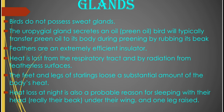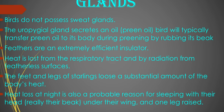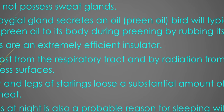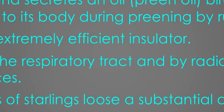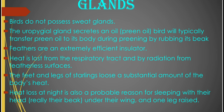The preen oil cleans the feathers and removes ectoparasites. The feathers are extremely efficient insulators. Heat is lost from the respiratory tract by radiation and also from the featherless surfaces. The feet and legs of some birds, like the starlings, lose a substantial amount of body heat because of the lack of feathers. Heat loss at night is also a probable reason why you find a bird sleeping with the beak under the wing and one leg raised — it's a way of conserving heat.